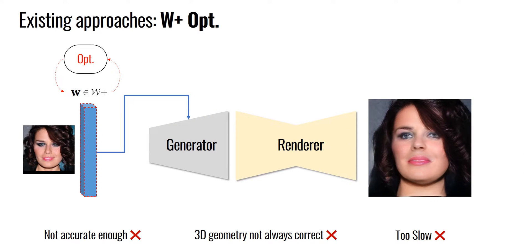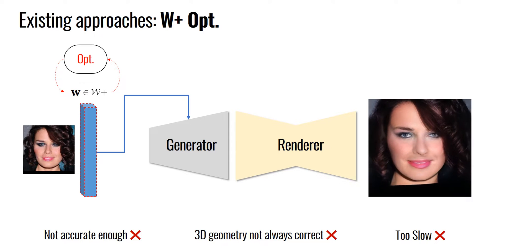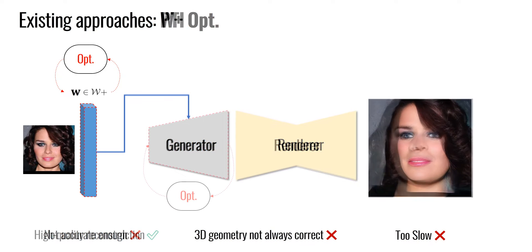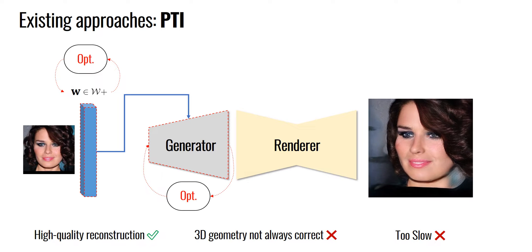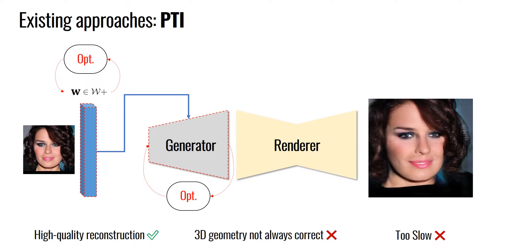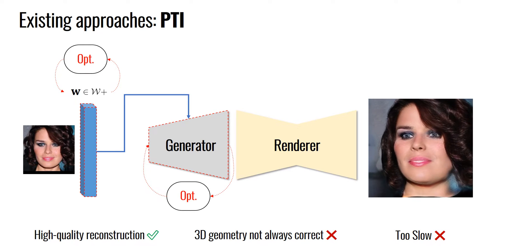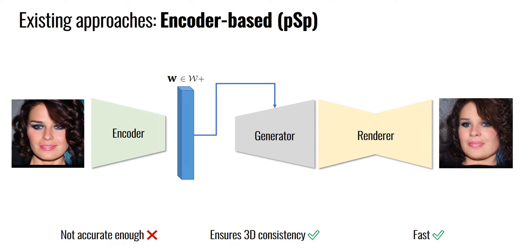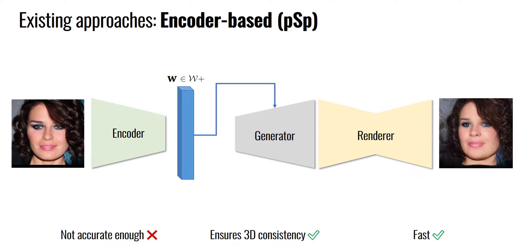State-of-the-art optimization-based methods perform very well for 2D GAN inversion. However, when applied to 3D GANs, they often fail to preserve identity and 3D geometry in the novel view and are time-intensive. Encoder-based approaches, exposed to a large number of images from arbitrary views during training, learn to preserve 3D geometry and are faster, but they fail to preserve fine details of the input image.